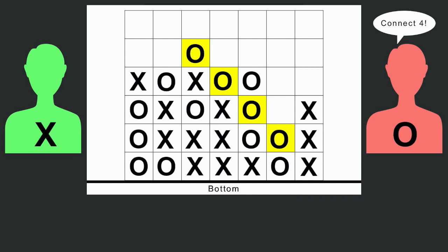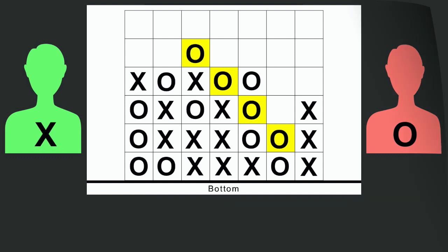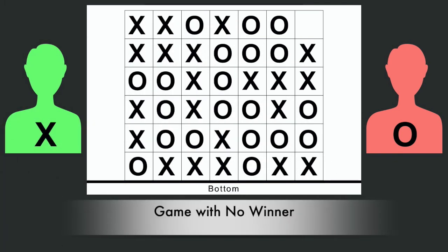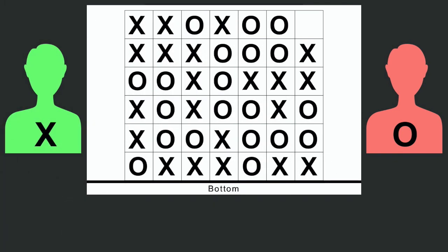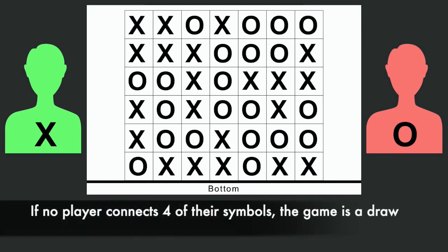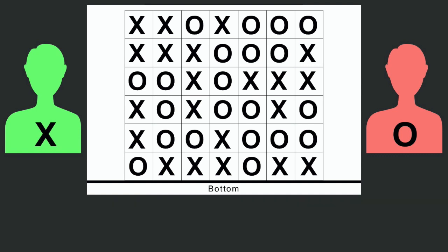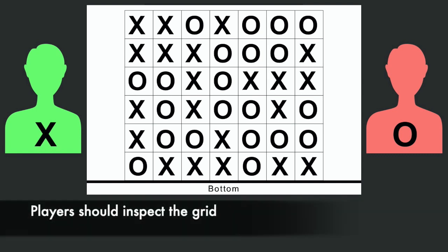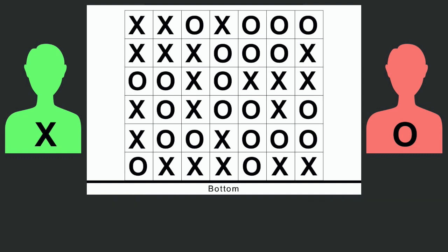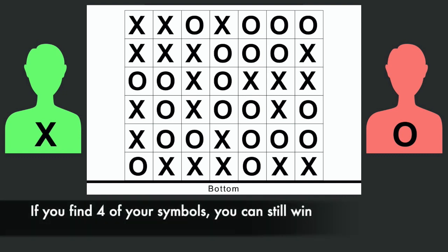The winner will always be the first player to notice their four symbols that they connected. It is possible for the game to end without a winner — if the last space is filled on the grid and no player has called out Connect Four, the game ends in a draw. Before declaring a draw, players should inspect the grid carefully, as it is possible that a player missed their Connect Four somewhere. If they find one, they can still call it out and win the game.